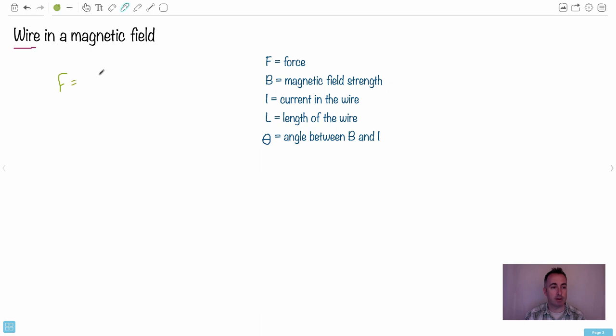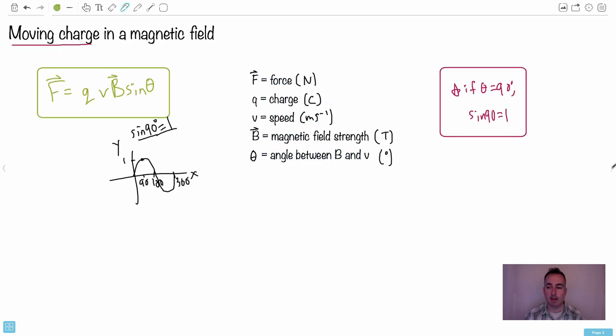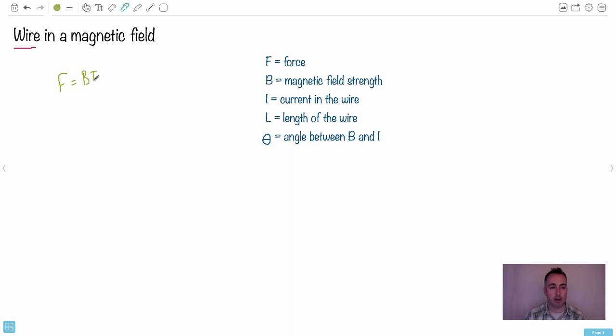This is another equation you get. This one looks a little bit like the other one, except instead of going QVB sine theta, this one goes BIL sine theta. So we'll define these things. F is a force, a magnetic force still, measured in newtons. Magnetic field strength, we know that now, it's Teslas. Current in the wire, it's measured in amperes. L, length of a wire, that's measured in meters. And finally, theta is the angle between B and I, measured in degrees.